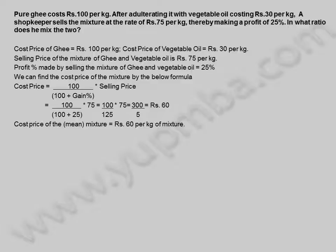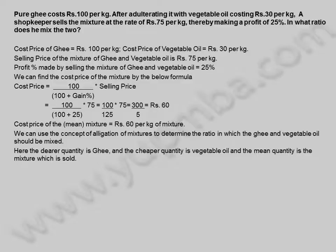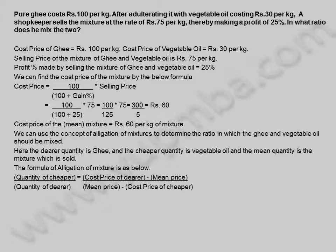Cost price of the mixture is 60 rupees per kilogram. We can use the concept of allegation of mixtures to determine the ratio. The dearer quantity is ghee, the cheaper quantity is vegetable oil, and the mean quantity is the mixture. The formula is: quantity of cheaper / quantity of dearer = (cost price of dearer − mean price) / (mean price − cost price of cheaper).